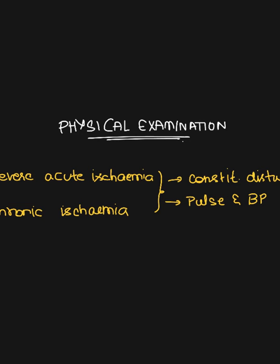In physical examination, there are two cases of ischemia: severe acute ischemia and chronic ischemia. In severe acute ischemia there will be many constitutional disturbances, including very high pulse rate and low blood pressure. In chronic ischemia, there are not many constitutional disturbances and no significant changes in pulse rate or blood pressure.